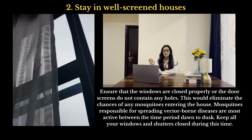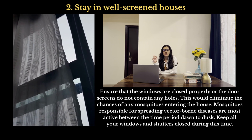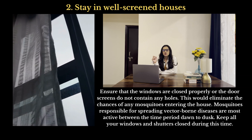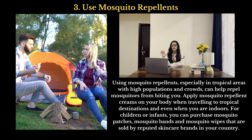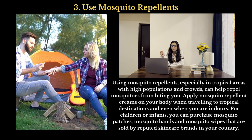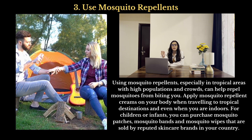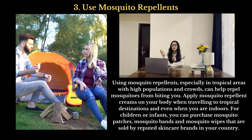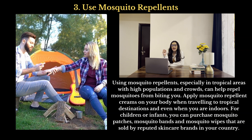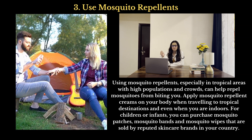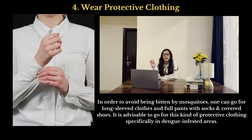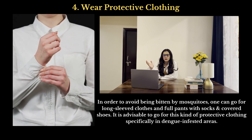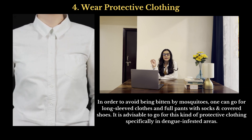Number two is to stay in well-screened houses. Ensure that windows are closed properly and door screens do not contain any holes, eliminating the chance of mosquitoes entering. Mosquitoes responsible for spreading vector-borne diseases are most active between dawn and dusk, so keep windows and shutters closed during this time. Number three is to use mosquito repellents, especially in tropical areas. Apply repellent creams on your body when traveling to tropical destinations. For children and infants, mosquito patches, bands, and wipes are available. Number four is to wear protective clothing — long sleeves, full pants, socks, and covered shoes — specifically in dengue-infested areas.